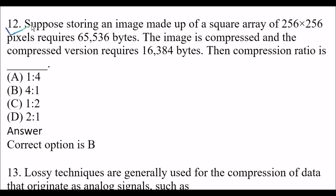Next question: Suppose storing an image made up of a square area of 256 × 256 pixels. The image is compressed and the compressed version requires 16,384 bytes. The compression ratio is — Option A: 1:4. Option B: 4:1. Option C: 1:2. Option D: 2:1. The right answer is option B, 4:1. If any student needs help solving this question, please comment and I will provide the solution.